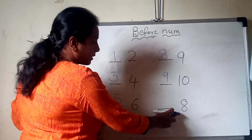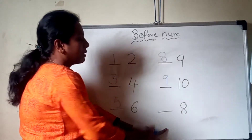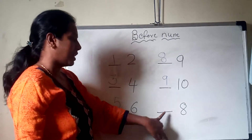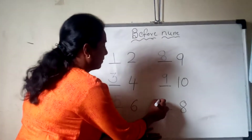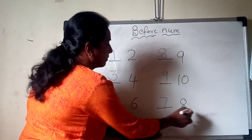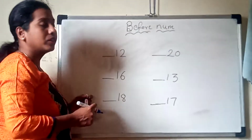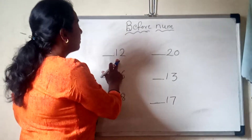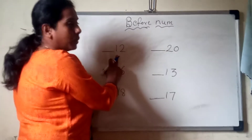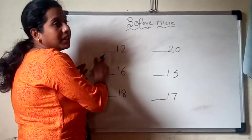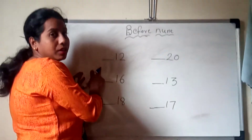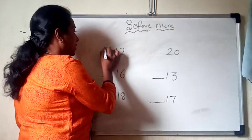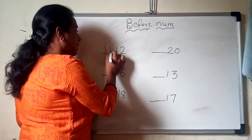Now next, 8. Before 8, which number is this? 7. Now look at here children. Now here which number is this? 12. Yes, so which number will come before? 11. Very good. 11.